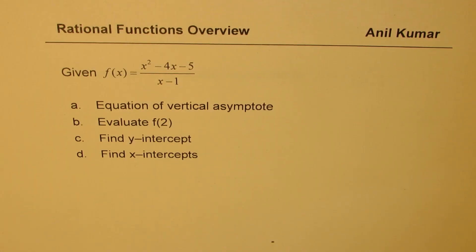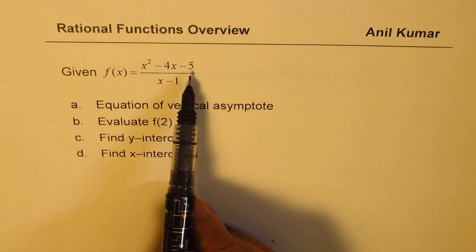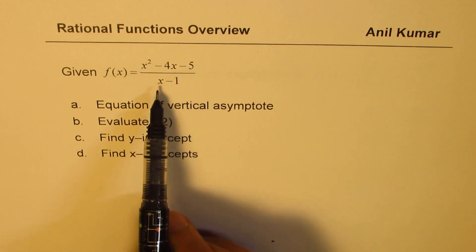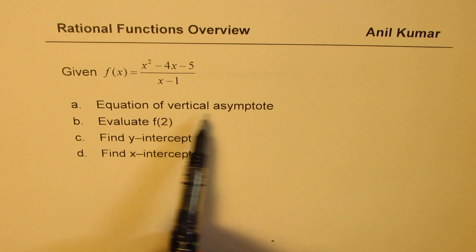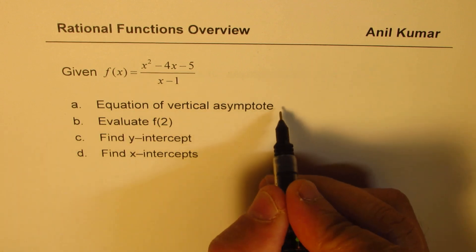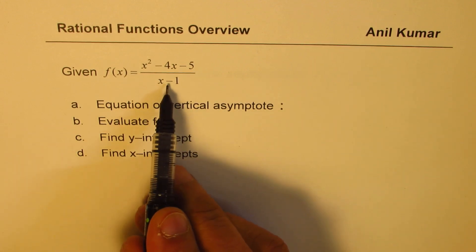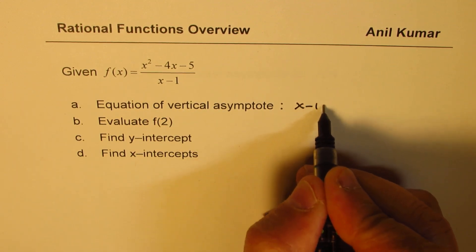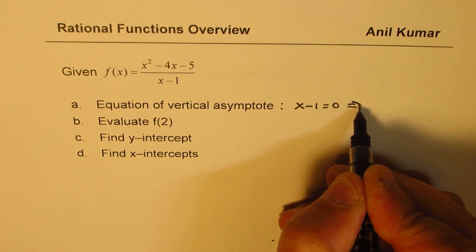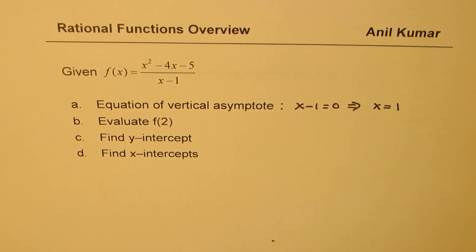We are given the function f(x) equals x squared minus 4x minus 5, divided by x minus 1. We need to find the vertical asymptote. For the vertical asymptote, equate the denominator to 0. So x minus 1 equals 0, which gives x equals 1 as your vertical asymptote.